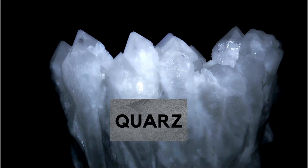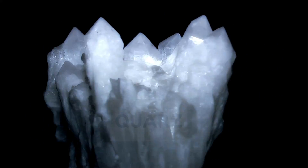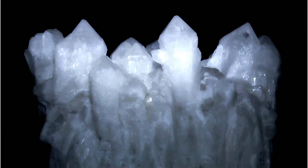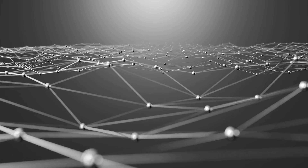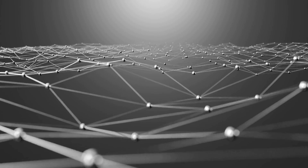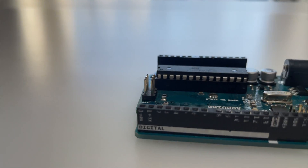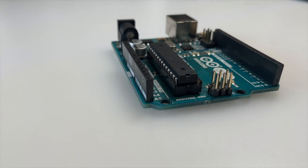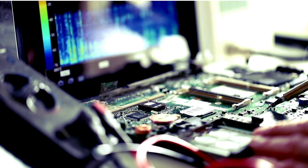The crystal in a crystal oscillator is usually made of quartz, which is known for its ability to vibrate at a specific frequency when an electrical signal is applied to it. The frequency of the crystal in an Arduino board is typically 16 megahertz, but this can vary depending on the type of board you have.